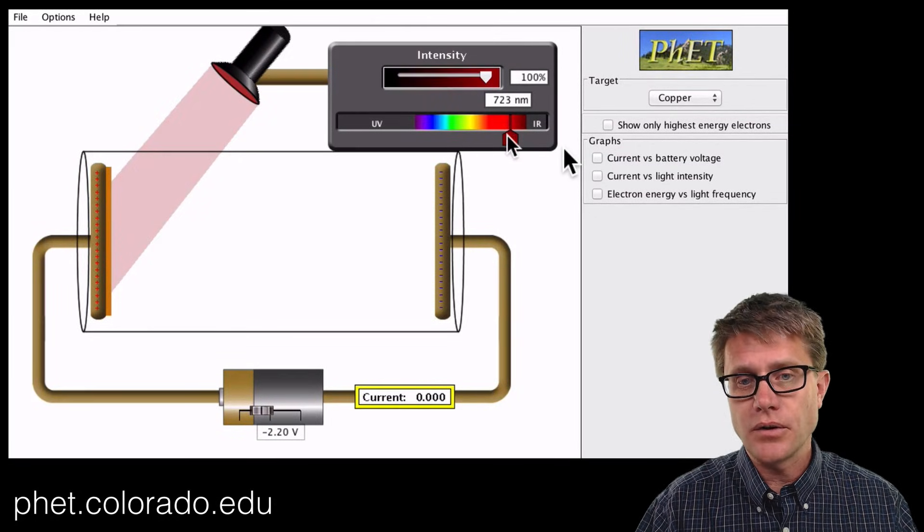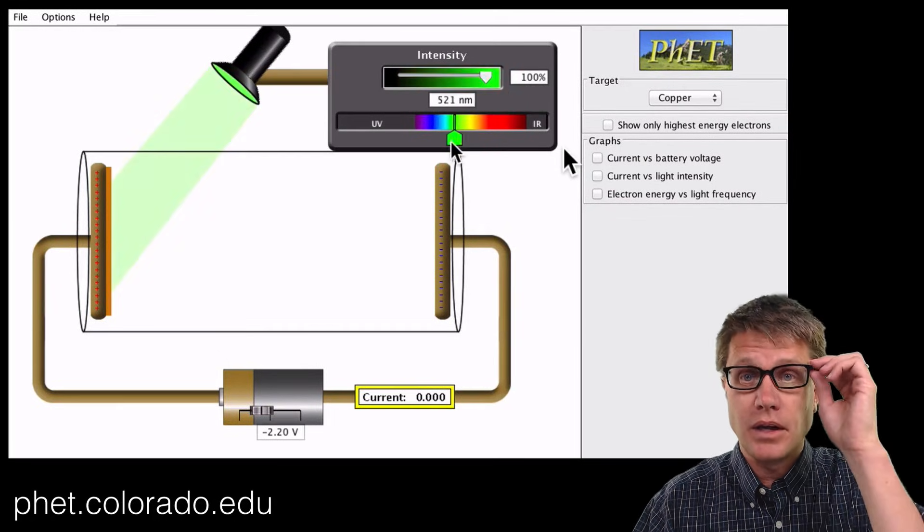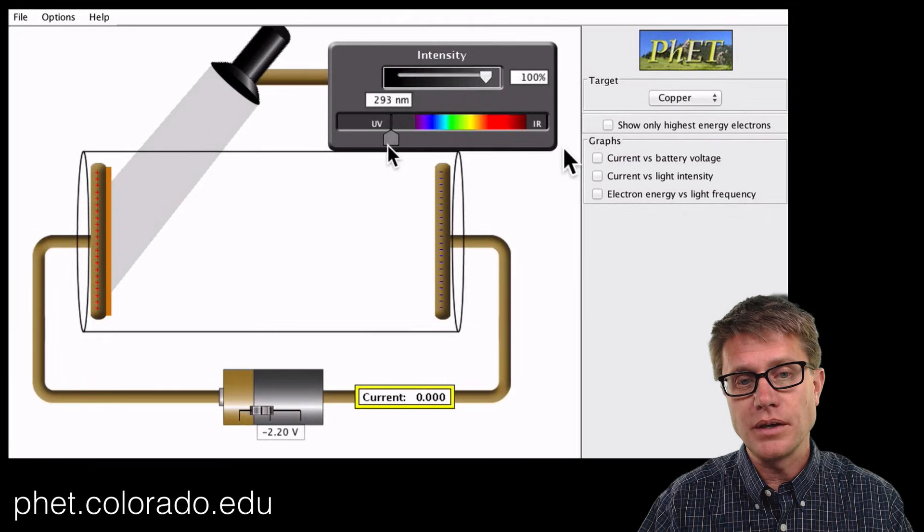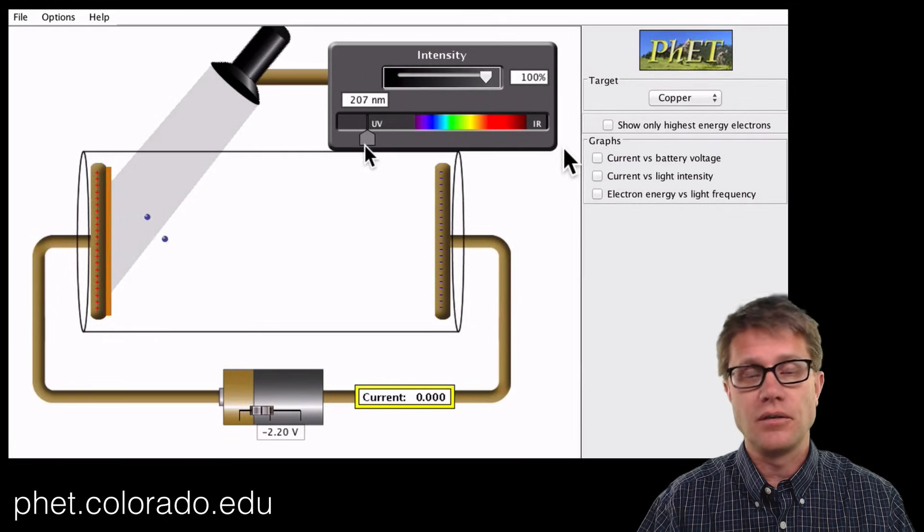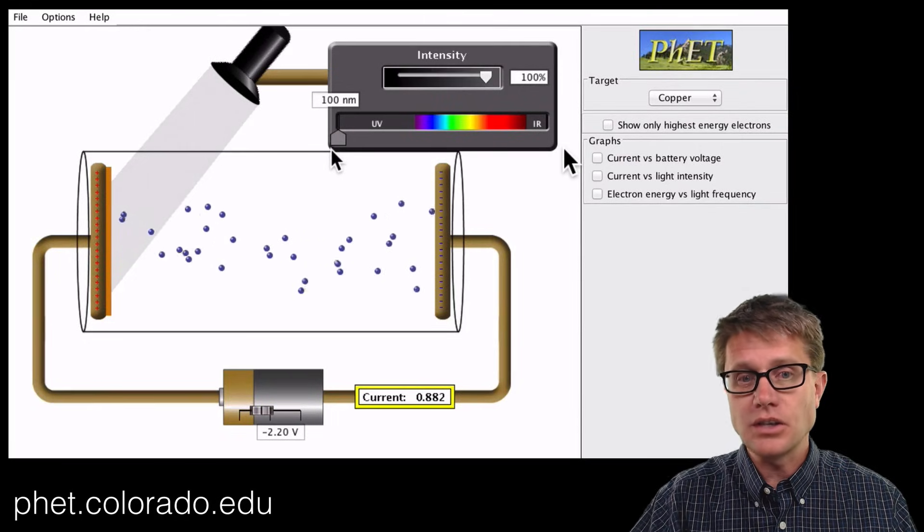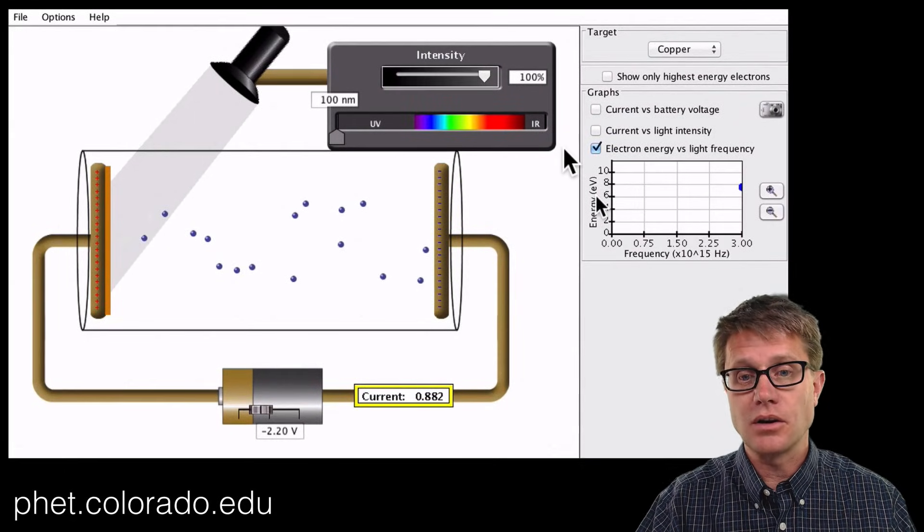Remember if we increase the wavelength we are decreasing the frequency. And what they found is when you tried infrared light nothing happened. But as you decrease the wavelength, therefore increase the frequency, what would happen is you would get to one point and then all of a sudden you get a flood of these electrons getting kicked off. And it was not a gradual change. It either kicked off the electrons and we generated current or it did not.